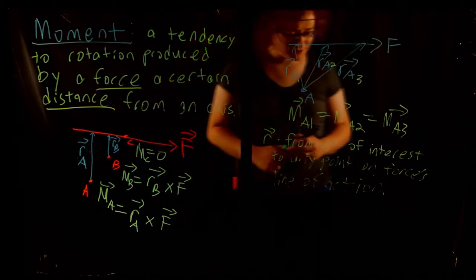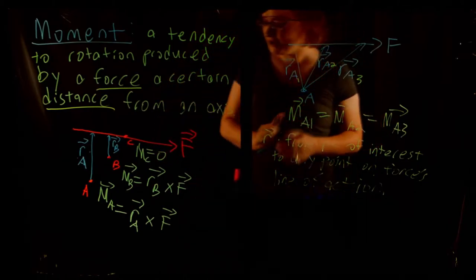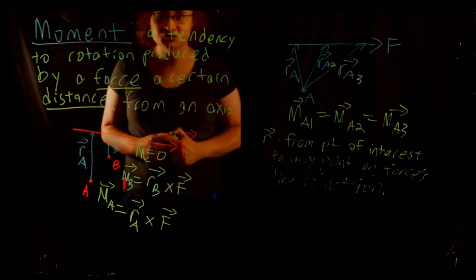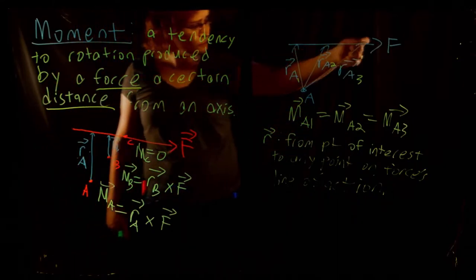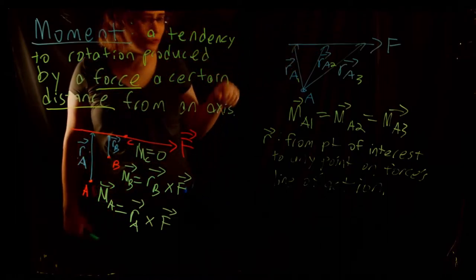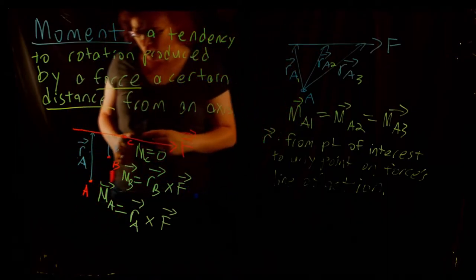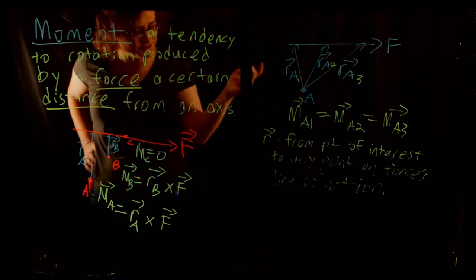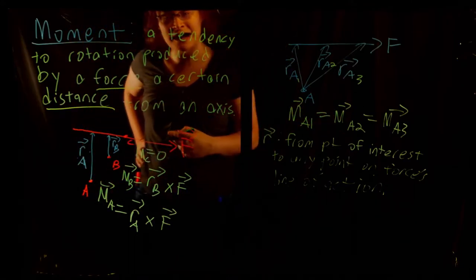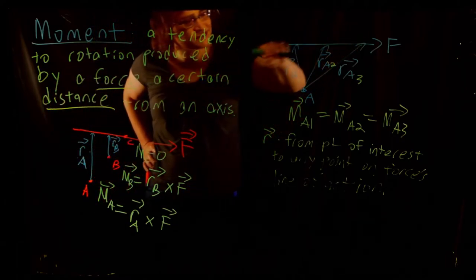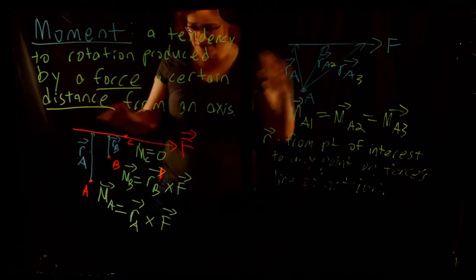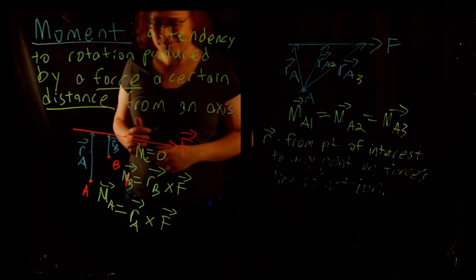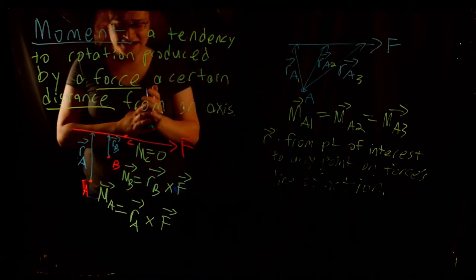This should look familiar, because this is a direct application of the principle of transmissibility. You can move a force anywhere along its line of action and it will have the same effect on a rigid body. You can move a force anywhere along its line of action and calculate the moment produced by it, and it will produce the exact same tendency to rotate regardless of where you move it along its line of action. This is fairly conceptual, but we will get to something more concrete as we move through.